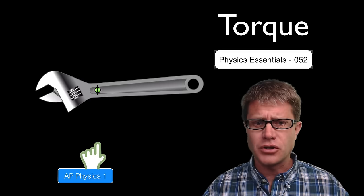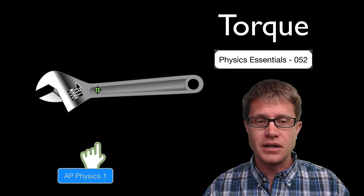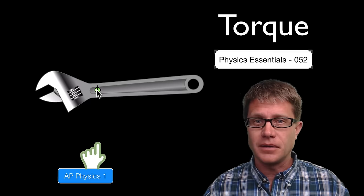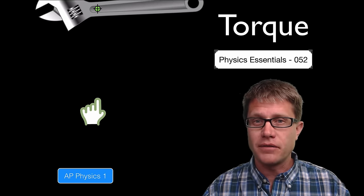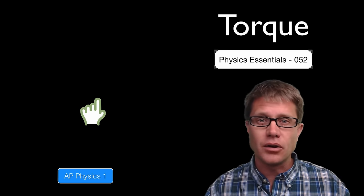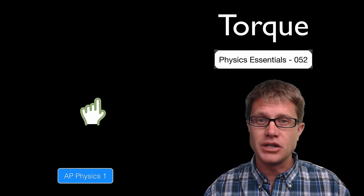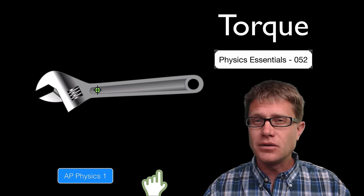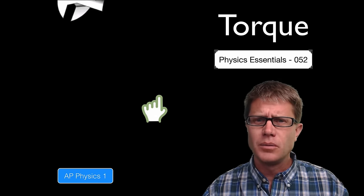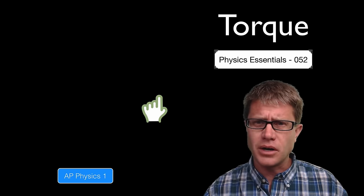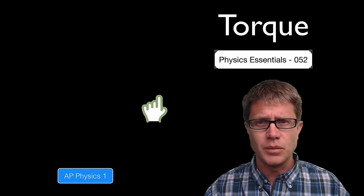So what is rotational motion? Imagine that we have got a wrench sitting here and I have marked the center of gravity. Let's say it is just sitting in space. If I apply a force right at that center of gravity, what we get is linear, or translational, motion — a force in one direction gives an acceleration in that direction. But if I apply a force off center, not at the center of gravity, we get two forms of motion: translational motion and rotational motion.